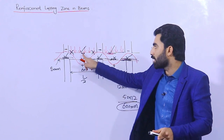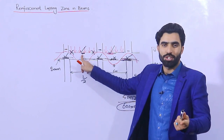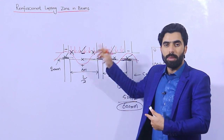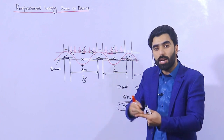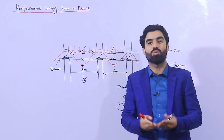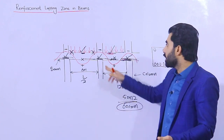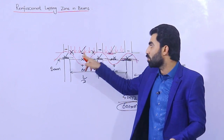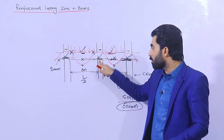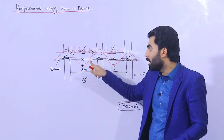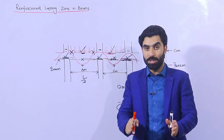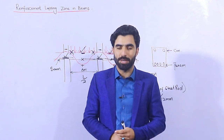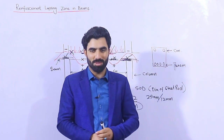The lapping should not be provided at the middle. At the top portion it is allowed because we have no tension there. At the middle we have positive bending moment, so we have maximum tension — not allowed. At the bottom portion we have maximum tension so we are not allowed there either. Therefore we can provide at the junction. Hope this short video can help you for reinforcement lapping zone in beams. Thanks for watching, see you in the next video. Goodbye.